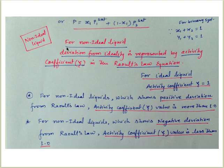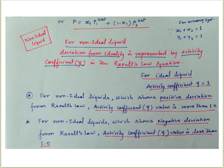For non-ideal liquids, deviation from ideal behavior is represented by the activity coefficient gamma in the Raoult's Law equation. For ideal liquids, the activity coefficient gamma equals 1. For non-ideal liquids showing positive deviation from Raoult's Law, gamma is greater than 1. For non-ideal liquids showing negative deviation, gamma is less than 1.